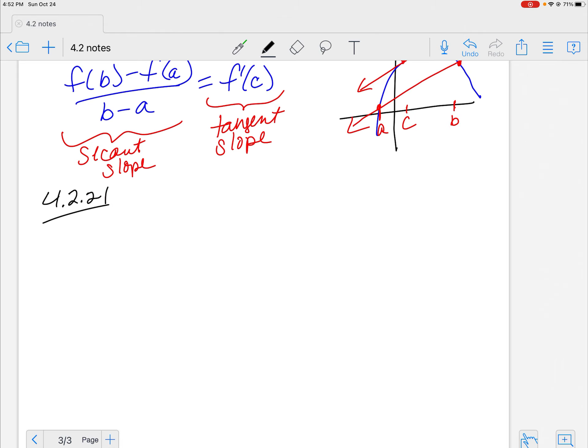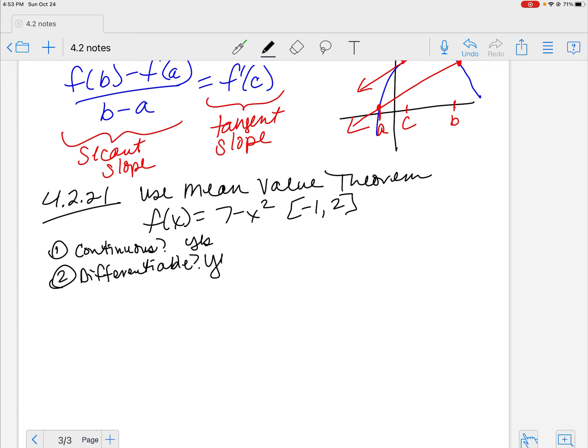I'm going to do 4.2.21, and we're going to use the mean value theorem in order to pull this off, where I have F of X is equal to 7 minus X squared from negative 1 to 2. Two criteria. Criteria number one, is this continuous? Criteria number two, is it differentiable? Now look at that. What is that? It's a quadratic, right? It's a parabola. So that's a polynomial, and that's what a quadratic is. So is it going to be continuous and differentiable? Yes, yes, yes. Both of these are because it's a polynomial.